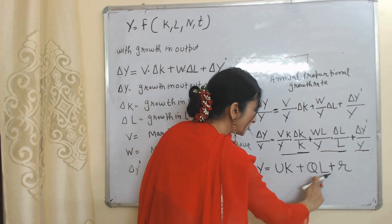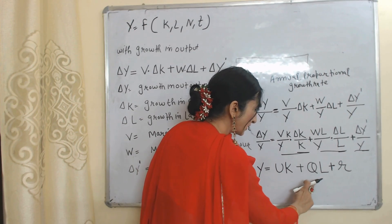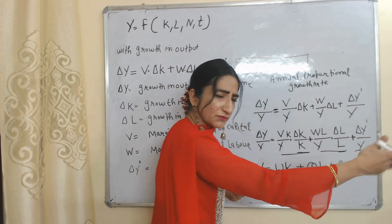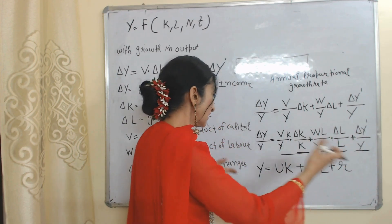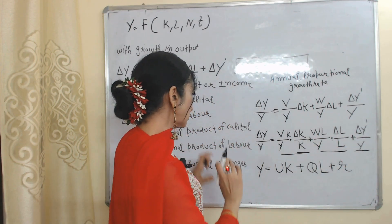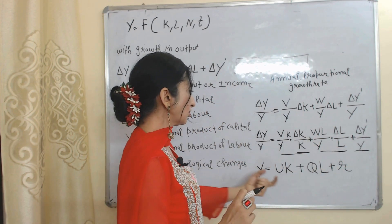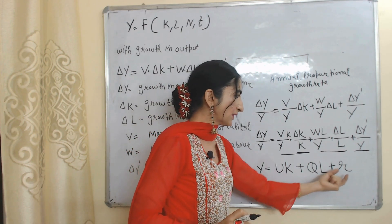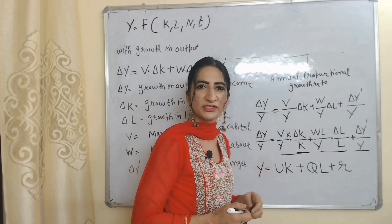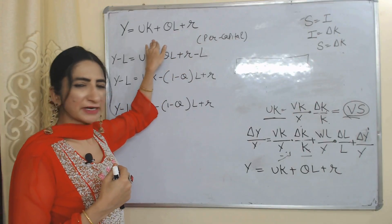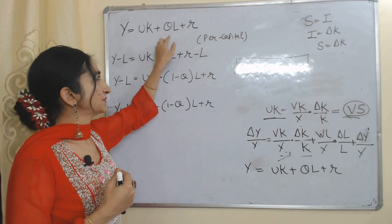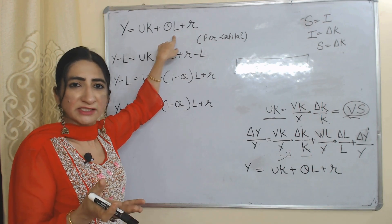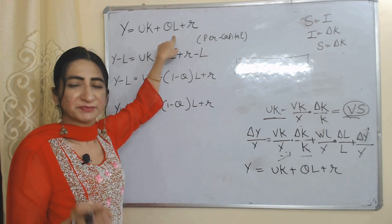So Y is the growth rate in national income, UK is the growth rate in capital, QL is the growth rate of labor, and R is the growth rate in technology or technological progress. According to this equation, our national income depends on the growth rate of capital, the growth rate of labor, and technological progress. Here L also represents population.